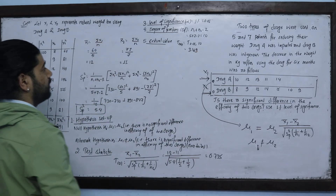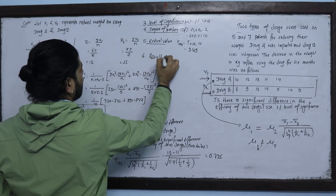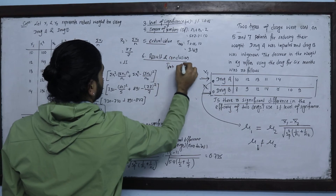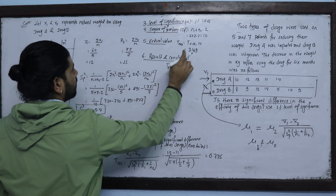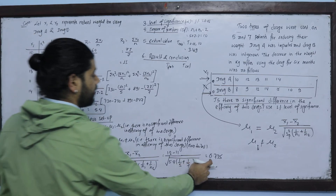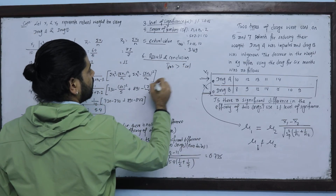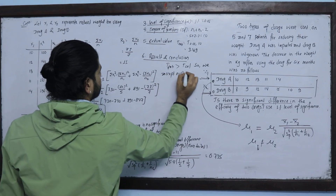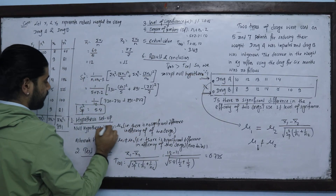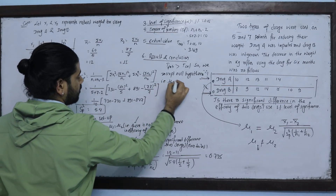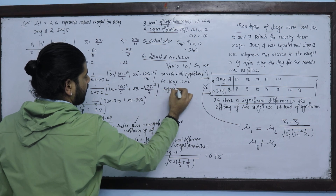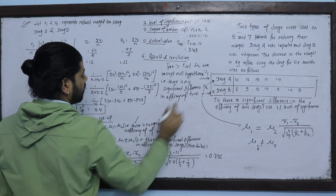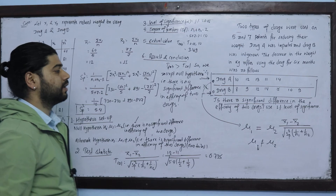Result and conclusion: the calculated value is 0.735 and the tabulated value is 3.169. Since the tabulated value is greater than the calculated value, we accept the null hypothesis. Therefore, there is no significant difference in the efficacy of the two drugs.